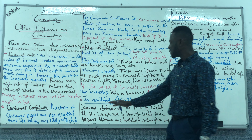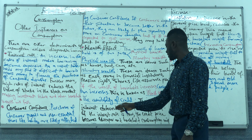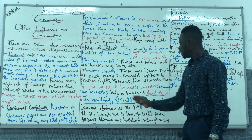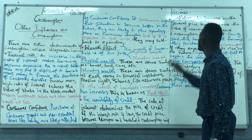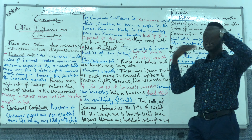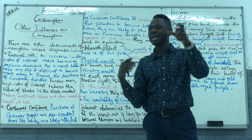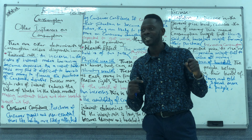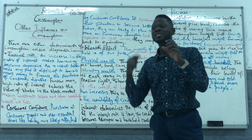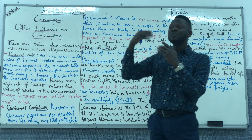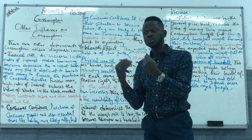The next factor is the availability of credit. The rate of interest determines the price of credit. If the interest rate is low, credit becomes cheaper and household consumption will increase. You can borrow as much as possible, so you can have a lot of money borrowed on your credit card because the interest rate is low. If the interest rate is high, you won't want to use your credit card, and as a result your consumption will fall.